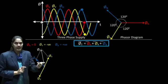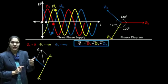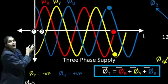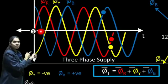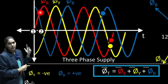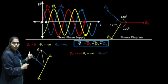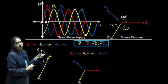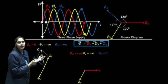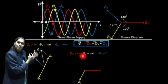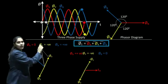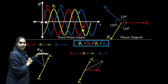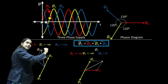Now we will consider the second instant and check the nature of φR, φY, and φB. For the second instant, we can see that φB is 0, φY is negative, and φR is positive. We have to do the addition of φR, φY, and φB. From the original phasor, remove φB because it is 0, extend φY in the opposite direction for minus φY, and keep φR as it is. The resultant of this parallelogram is the resultant flux.